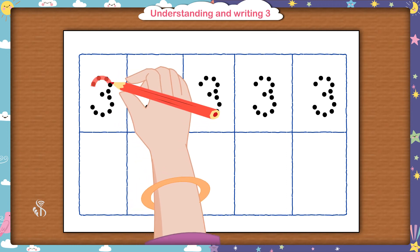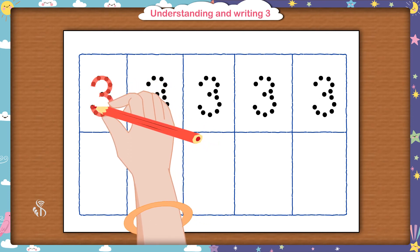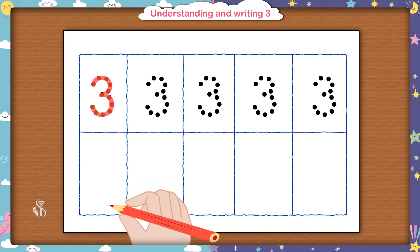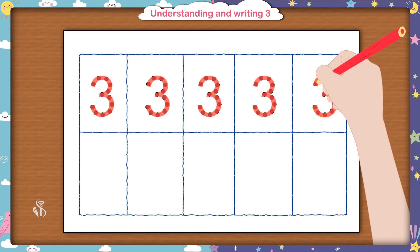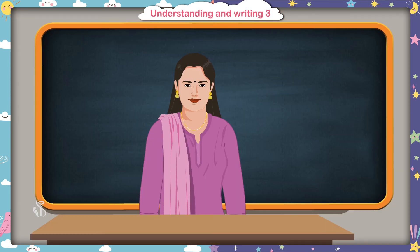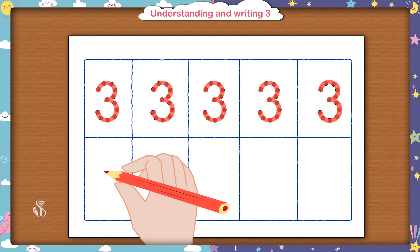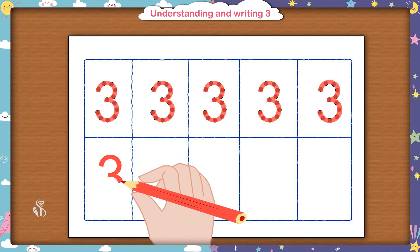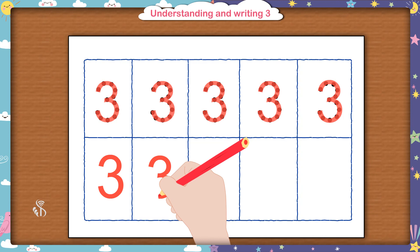First, you draw the above half circle, and then draw the below half circle. Now the figure for number 3 is ready. Trace the remaining ones as well. You have traced well. Now I will show you how to write 3 without the help of the dots, after which you also write the number 3 without the help of the dots. 3. Good.